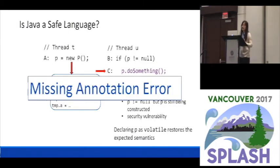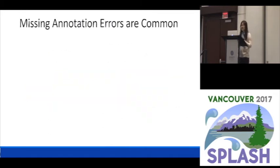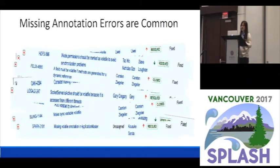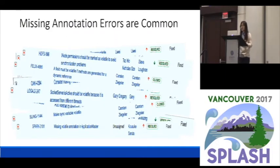We call this kind of error a missing annotation error, because basically you have these errors only because you missed some annotations. Now these kinds of errors are actually very common. If you just search online — for example in the Apache bug repository — you can find many cases of such bugs. Like here you can see bugs from HDFS, from Log4j, or from Spark. These are real projects and real errors.